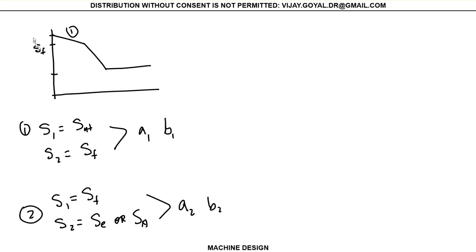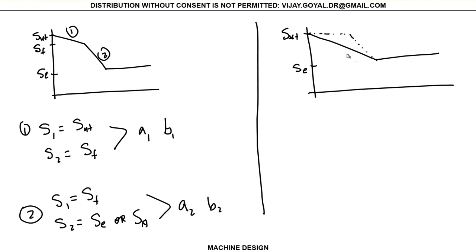This is S-f, this is S-u-t, this is S-e. Now for the traditional, for the conservative approach, what we do is we have S-u-t, and then we have S-e or S-n, which is to a straight line. So this is a traditional approach. This is a conservative approach. Let's call this number three.